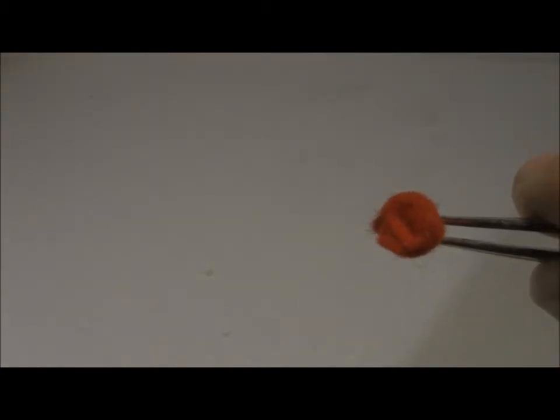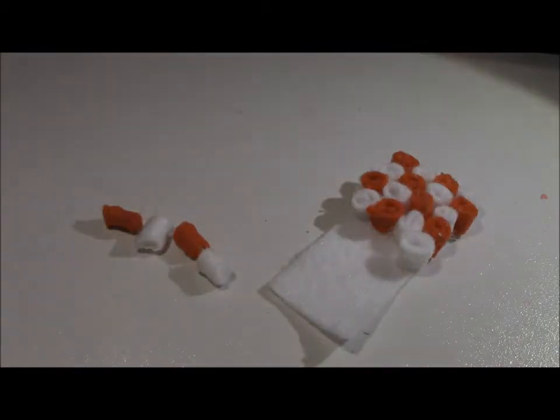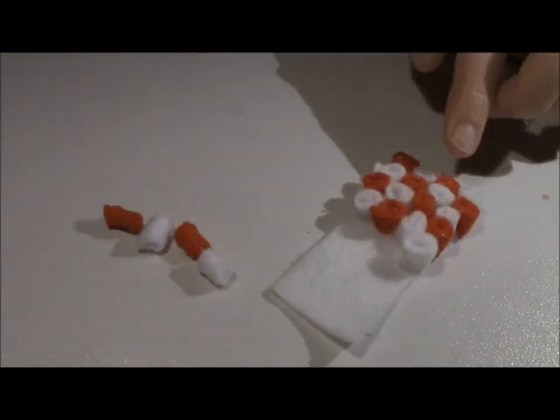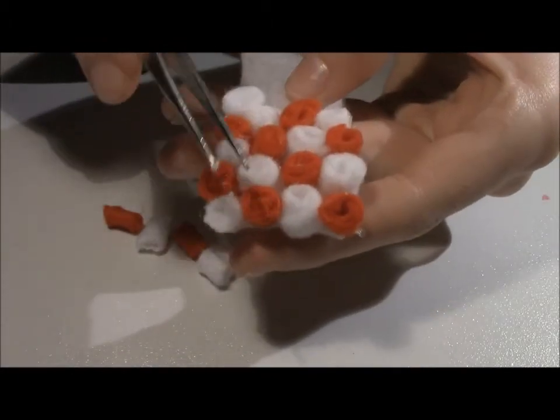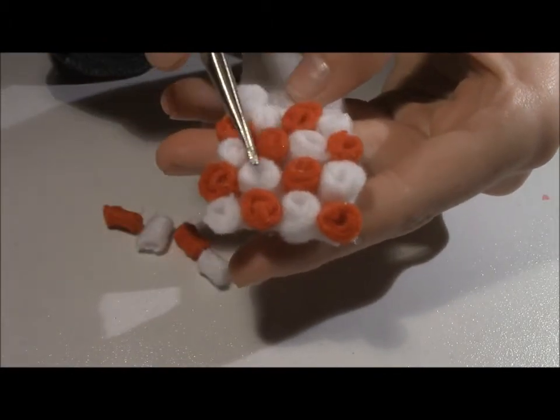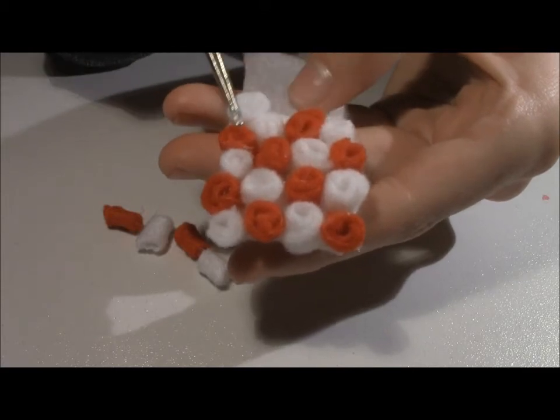Now, we're going to glue it onto the blanket. So as you can see, I've already started my pattern. It just goes red, white, red, white, white, red, white, red, and it just goes on from that pattern. And now, I'm just going to show you how to put it on.